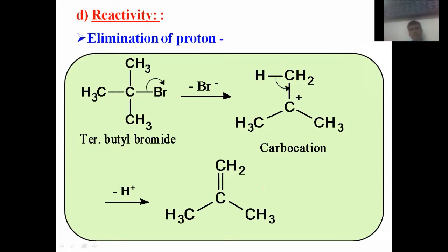This is another example of carbocation reactivity. The alkene product obtained here is actually isobutylene.